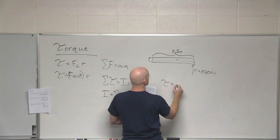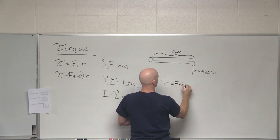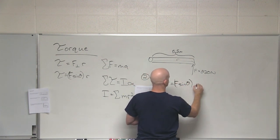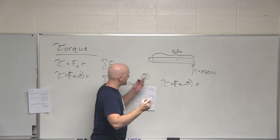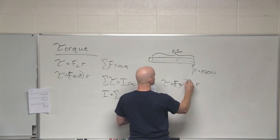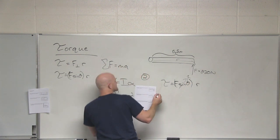So in this case, torque equals, and in this case, what's theta? 90 degrees, so sine of 90 is 1, so this just goes away. We're really just F times R.